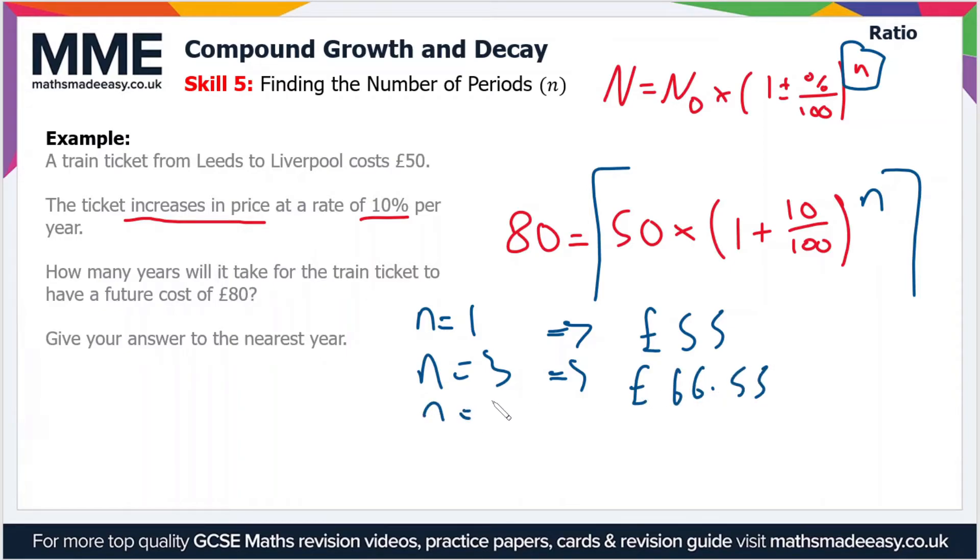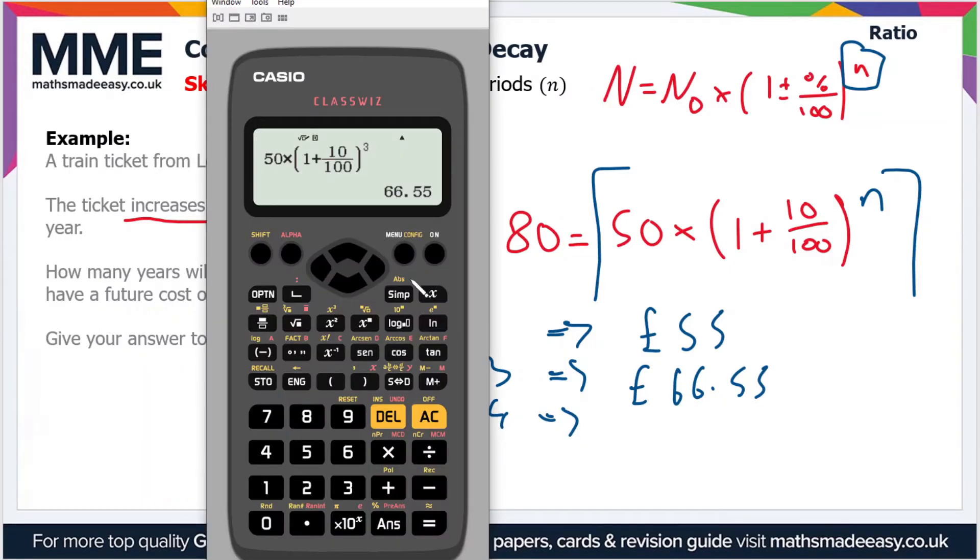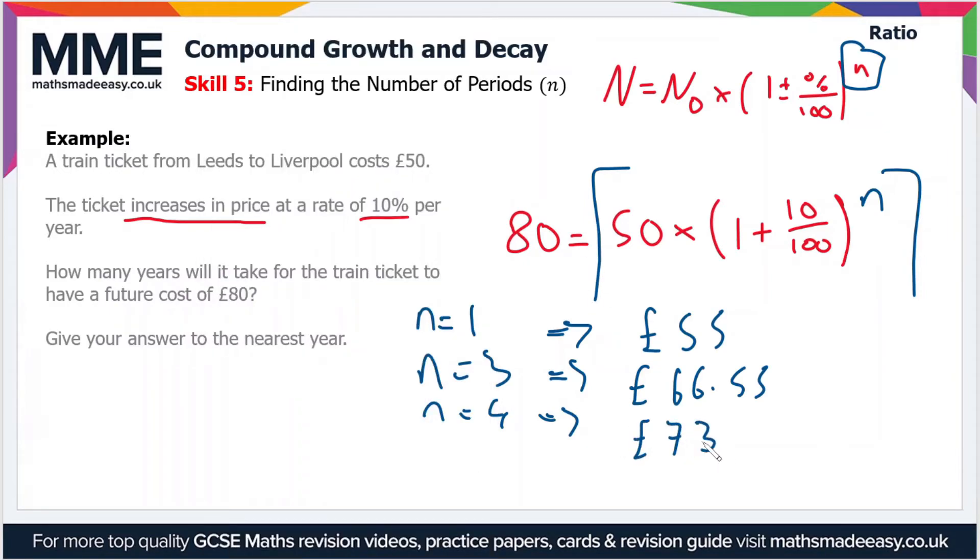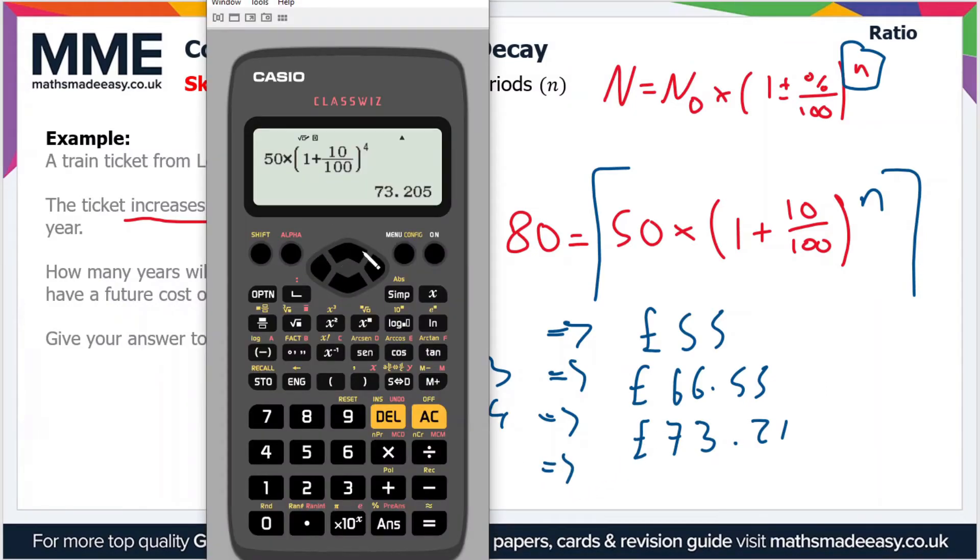What about n equals 4? Okay, £73.21, so we're not quite there yet. What about n equals 5?